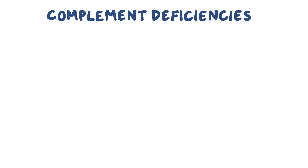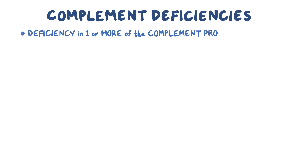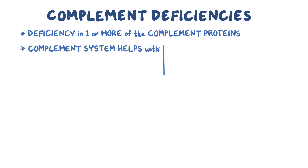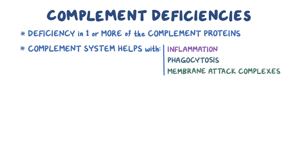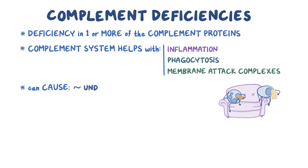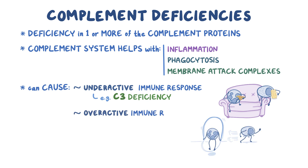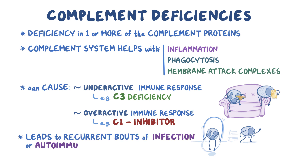As a quick recap, complement deficiencies are a group of disorders, all of which have a deficiency in one or more complement proteins. The complement system helps with three important processes: inflammation, phagocytosis, and the creation of membrane attack complexes. Complement deficiencies can either cause underactive immune responses — like if a deficient protein would normally activate the complement system, say with C3 — or an overactive immune response, like if a deficient protein would normally inhibit the complement system, say with a C1 inhibitor. Typically, complement deficiencies lead to recurrent bouts of infection or autoimmune reactions.